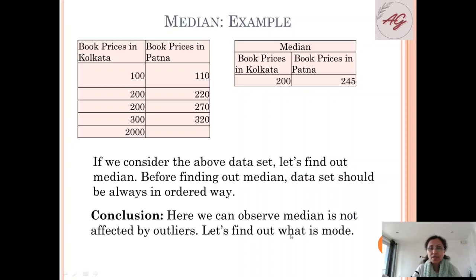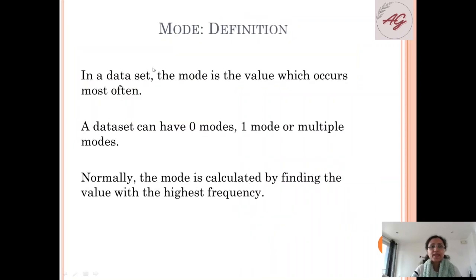Now let's understand what is mode. In a data set, the mode is the value which occurs most often. A data set can have zero mode, one or multiple modes. Normally the mode is calculated by finding the value with highest frequency.